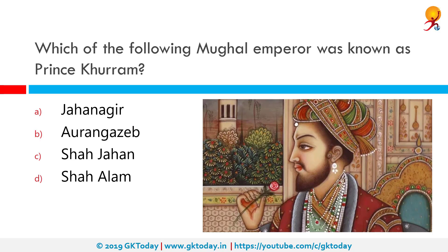Which of the following Mughal Emperors was known as Prince Khurram? That would be Shah Jahan. Shah Jahan's original name was Shahbuddin Muhammad Khurram, and Shah Jahan is his regnal name. He was the fifth Mughal Emperor who reigned from 1628 to 1658, and his reign represented the height of Indian architecture, most notably the Taj Mahal.